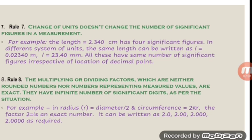Rule 8: multiplying or dividing factors which are neither rounded numbers nor numbers representing measured values are exact — they have an infinite number of significant digits. For example, in the formulas: radius = diameter / 2 and circumference = 2πr, the factor 2 is an exact number. It can be written as 2.0, 2.00, 2.000, and so on.